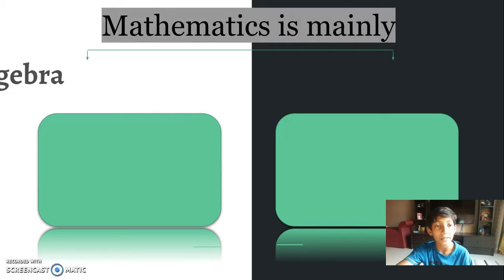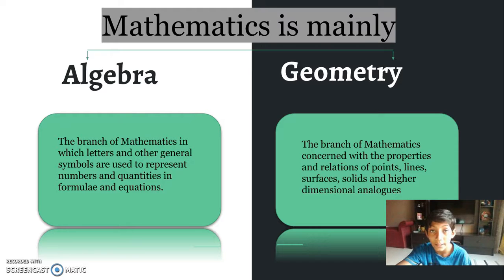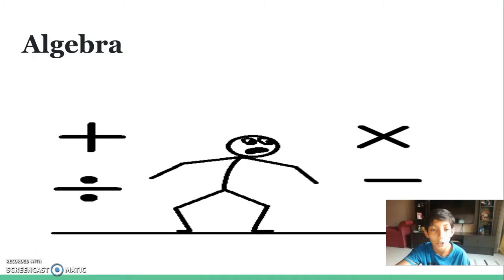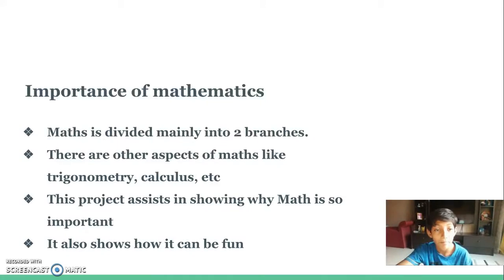So mathematics is mainly algebra and geometry. Algebra is the branch of mathematics in which letters and other general symbols are used to represent numbers and quantities in formulas and equations. Geometry is the branch of mathematics concerned with the properties and relations of points, lines, surfaces, solids, and higher dimensional analogues. So this is a funny gif that I found on algebra and this is another gif that I found on geometry. And what is the importance of mathematics?